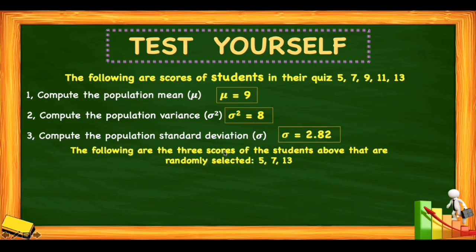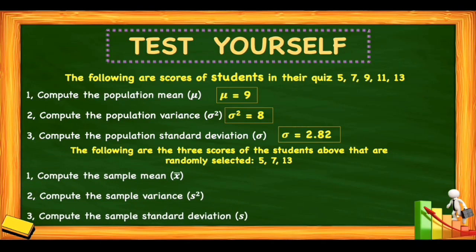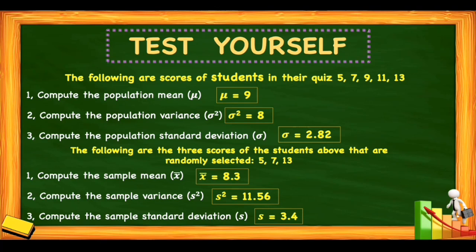Problem 2: From the scores above, 3 scores are randomly selected: 5, 7, and 13. Compute the sample mean, sample variance, and sample standard deviation. The answers are: sample mean = 8.3, sample variance = 11.56, and sample standard deviation = 3.4.